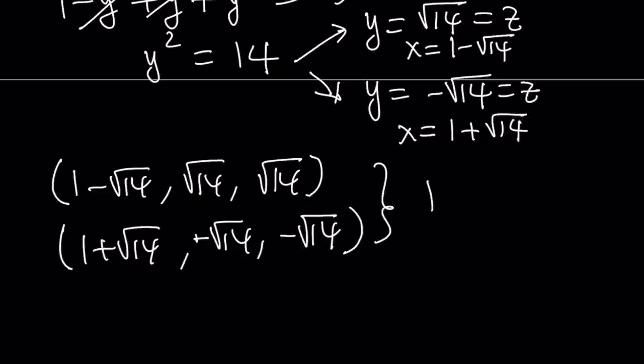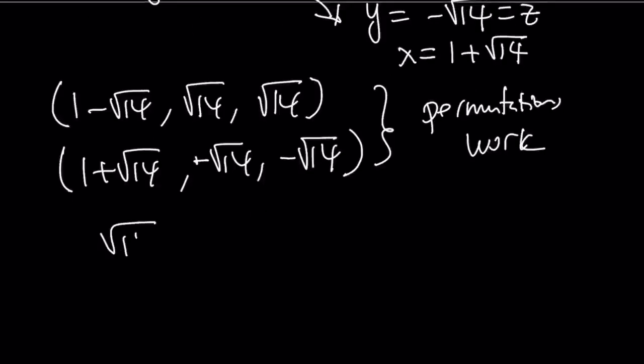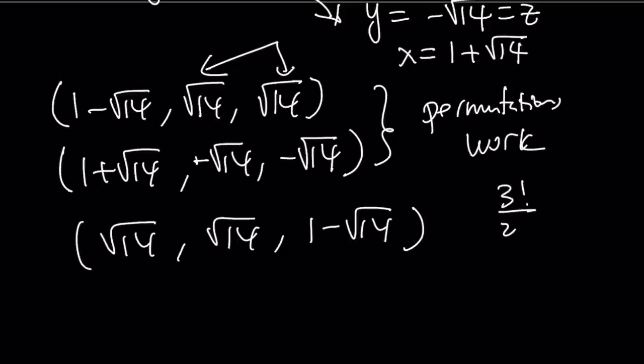And, of course, the permutations of these will also work. Why? Because whatever x can be, z can be. So, I can safely say that, doesn't this work? Square root of 14, square root of 14, and 1 minus square root of 14. Yes, it does, because x, y, z are all interchangeable, and pretty much you can take any permutations. But when I say any permutations, these two elements are the same. Therefore, when you switch them around, it's not going to make a difference. So, you're kind of talking about permutations with repetitions here, which is 3 factorial divided by 2 factorial, which is basically 3.